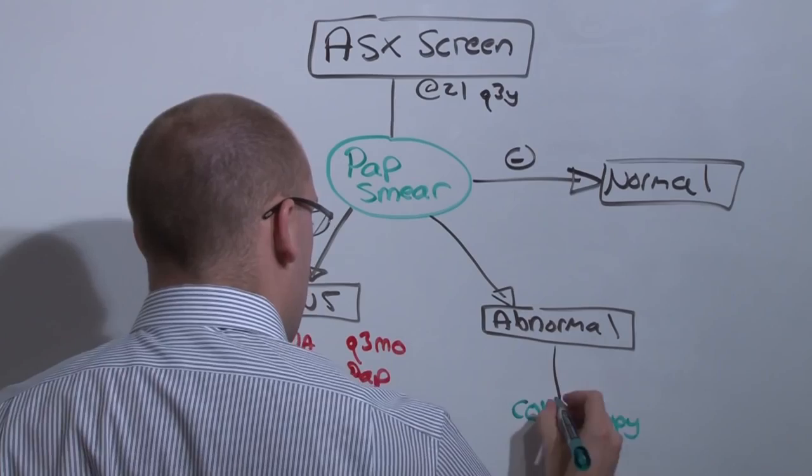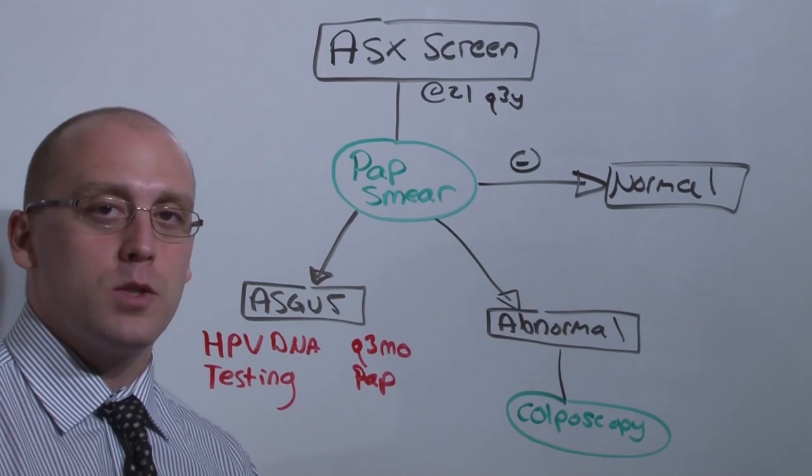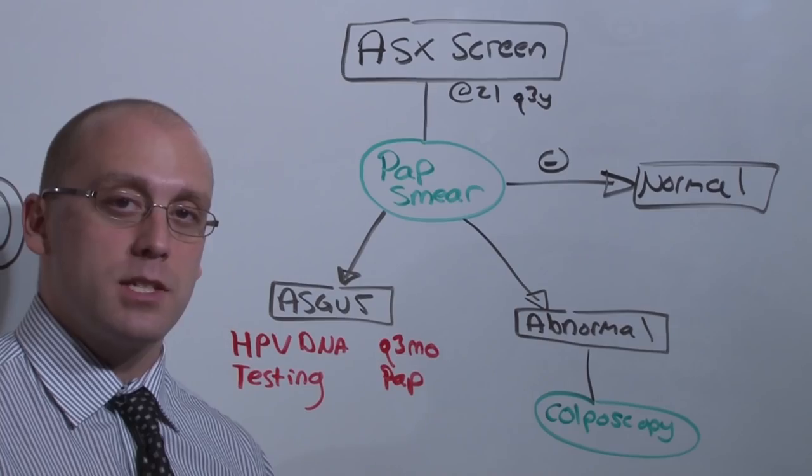If ever you have frankly abnormal, or ASCUS that's turned abnormal, you should reflexively perform the colposcopy. The colposcopy gives you two things: an ectocervical sample as well as an endocervical sample. If you find positivity on either test, it directs your next step.